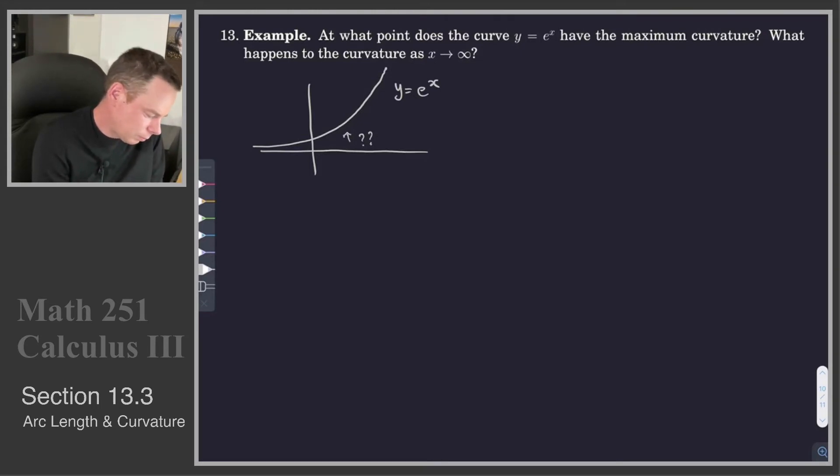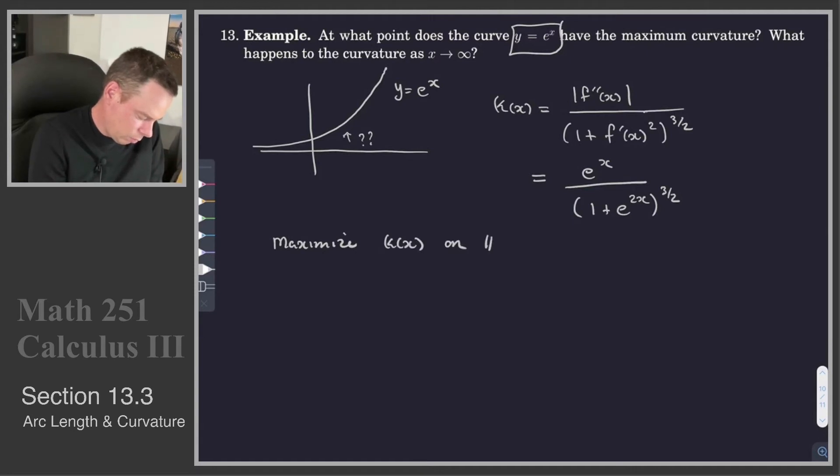So we're going to go ahead and find the curvature. The curvature at a given position x is given by the magnitude of the second derivative all over the 1 over the derivative squared to the 3 halves. That was the formula we just worked out above. This is e to the x is our second derivative. Remember, our function is y equals e to the x. So now we can plug those things in. That's a 1 plus e to the 2x to the 3 halves. So there's our curvature formula. We want to maximize. So we want to maximize k of x on the whole real line. So this is a max min problem now, optimization problem.